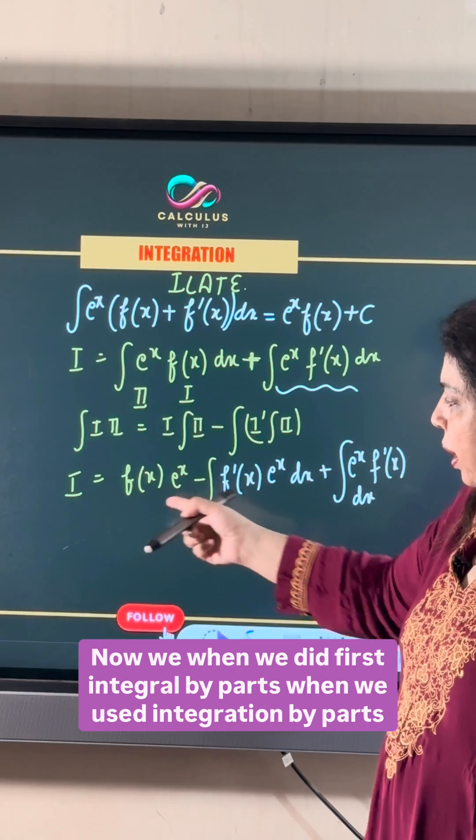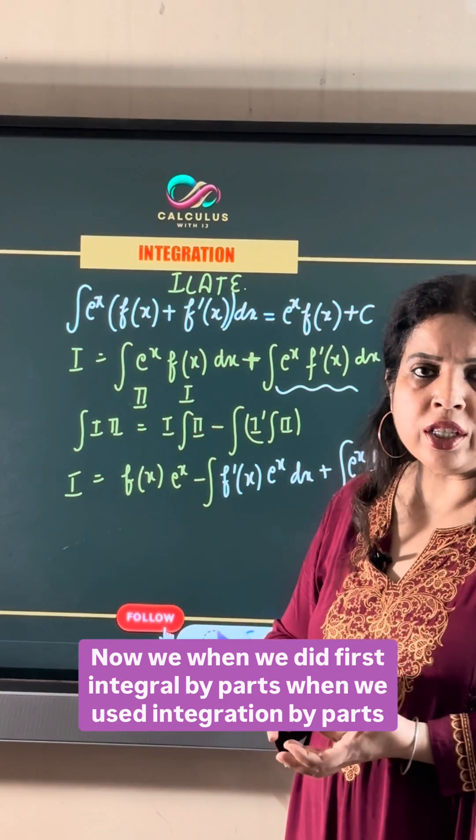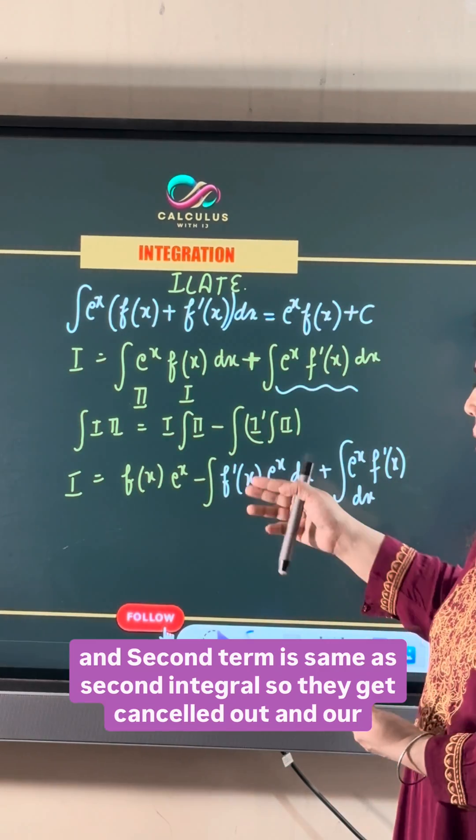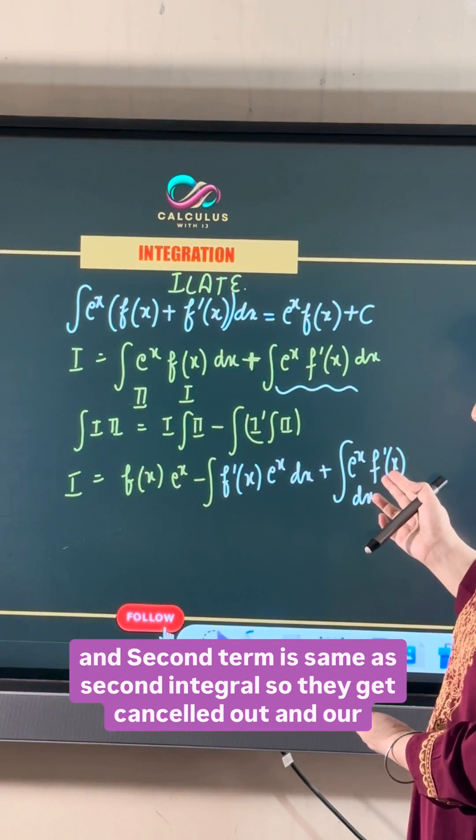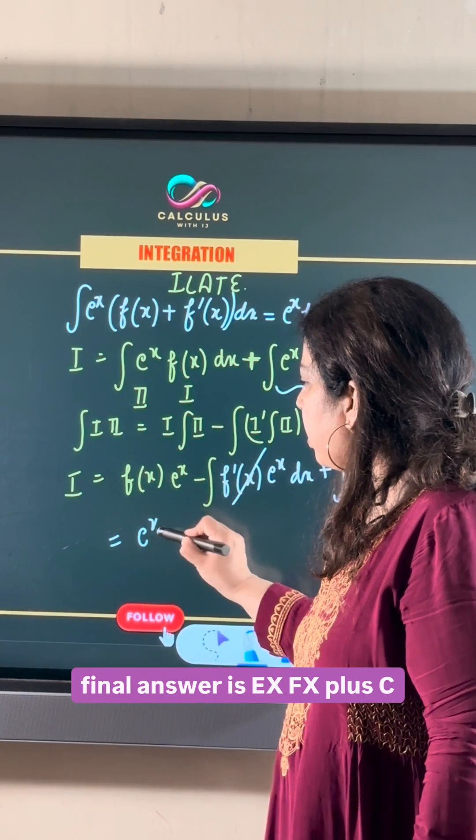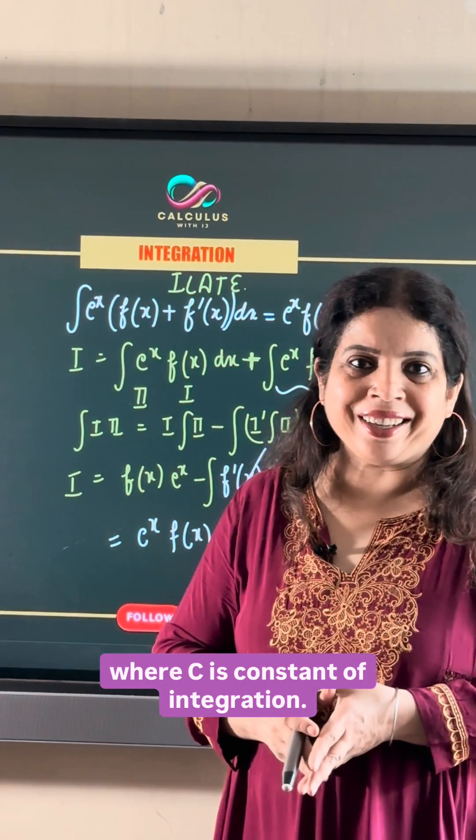Now when we used integration by parts in first integral, we get two terms and second term is same as second integral. So they get cancelled out and our final answer is e^x·f(x) + c where c is constant of integration.